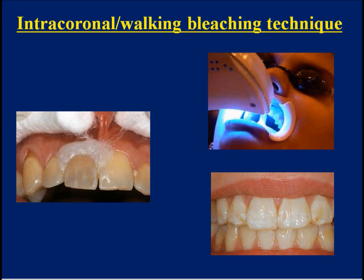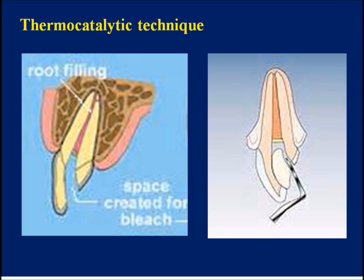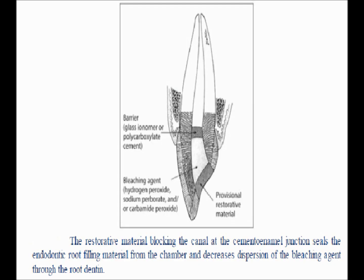Intracoronal walking bleach technique: take a radiograph to ensure good endodontic obturation. Isolate the tooth with rubber dam. Prepare an access opening and clean the pulp chamber from any gutta-percha or filling material. Place a barrier of glass ionomer cement, 2 mm thickness, on the coronal aspect to protect the dentinal tubules from penetration of the bleaching agent. Place freshly mixed sodium perborate and water in the pulp chamber. Place a temporary material to seal the access opening. Recall the patient after 1–2 weeks and repeat when needed. After completion, close the access opening with composite material.